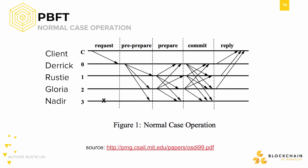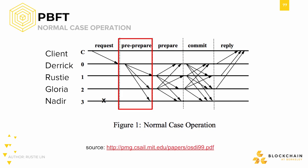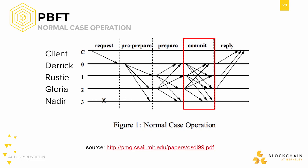The diagram has five processes, or nodes in our case. The client is process C. Derek is process 0. I'm process 1, Gloria process 2, and Nadir is process 3. In the first step, the client sends a message to Derek, process 0 — that's the initial request. During this time, Nadir fails. Then Derek sends a pre-prepare message to the rest of the processes. Everyone except Nadir responds with a prepare message. After acknowledging everyone's presence, we all send the commit message. And after hearing a sufficient amount of commits, we respond directly to the client.